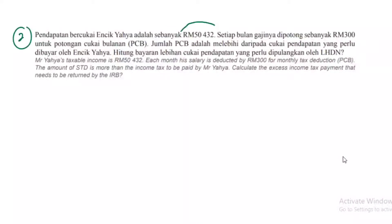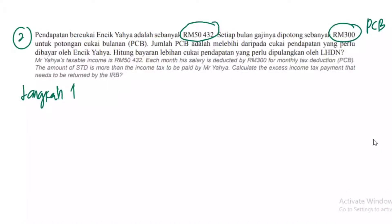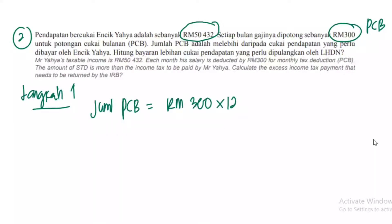Soalan kedua: pendapatan bercukai dia sebanyak RM50,432. Setiap bulan gajinya dipotong RM300 untuk PCB. Langkah yang pertama — jumlah PCB dulu. Sekarang RM300 didarabkan dengan 12 bulan, dia akan dapat RM3,600. RM3,600 ni yang dipotong dalam slip gaji dia.